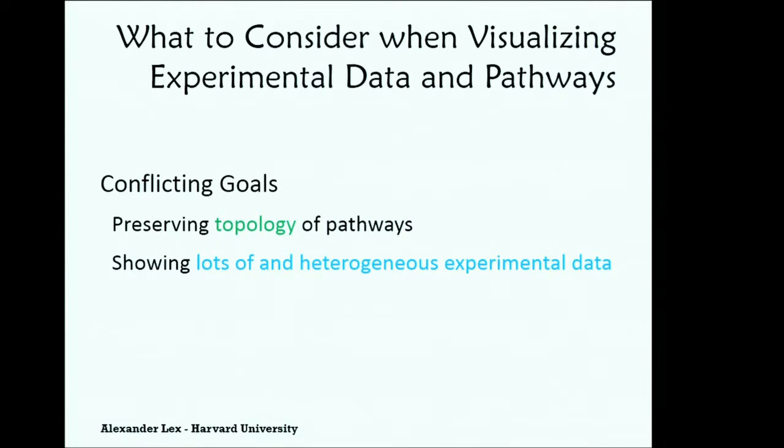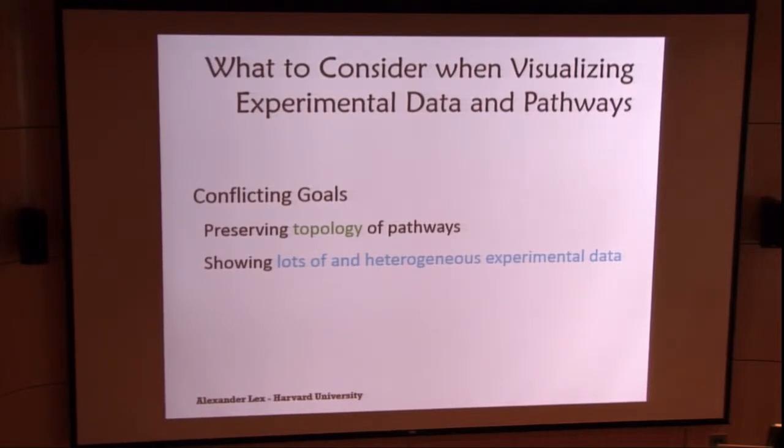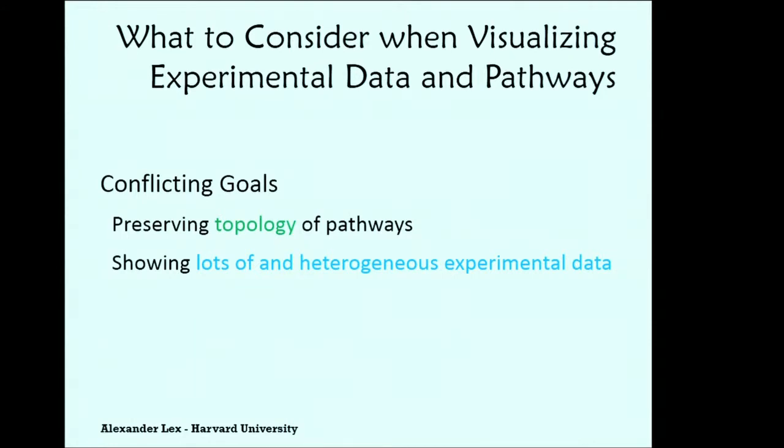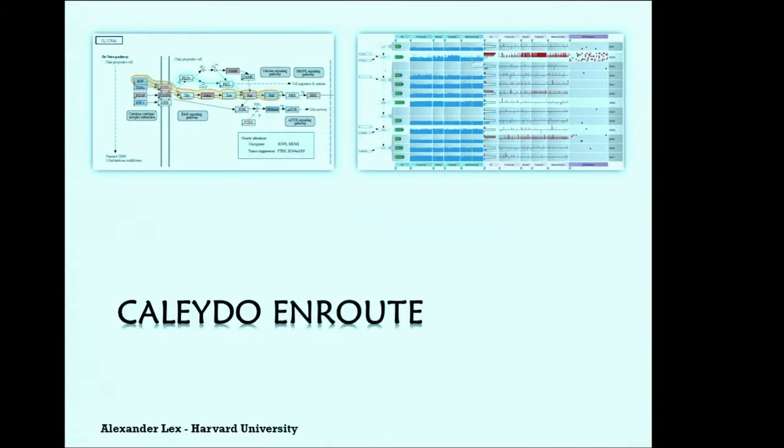What do you have to think about if you would like to visualize experimental data in the context of pathways? Well, you have two conflicting goals. The first one is you want to preserve the topology of the graph you're looking at. So you want to be able to judge what is connected, what are the interdependencies between the different nodes. And at the same time, you want to be able to show a lot of heterogeneous experimental data. So you might have five or six different data sets with 500 patients each and 10 groups each. So that's, as you can see, if you want to visualize lots of experimental data, you'd have to go into some kind of matrix representation. But if you want to preserve the topology, then you have a problem if you want to do both at the same time. And we're trying to cheat this a little bit by finding a compromise with the Caledo enRoute technique.